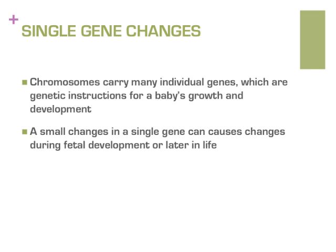Chromosomes carry thousands of individual genetic instructions. We could think of chromosomes as being like a set of books on a shelf. Each chromosome is a separate book, and the individual genes are like sentences, paragraphs, and chapters within each book. If there is a change in a sentence within that chapter, it may change the way it is read and interpreted. Some of these changes in single genes can cause changes in fetal development and for an individual later in life.